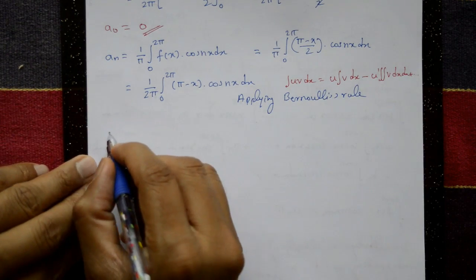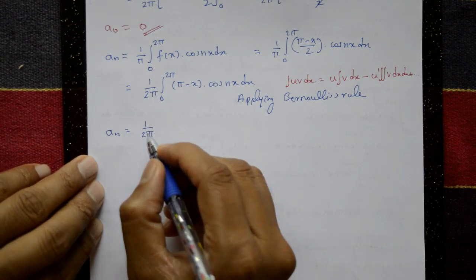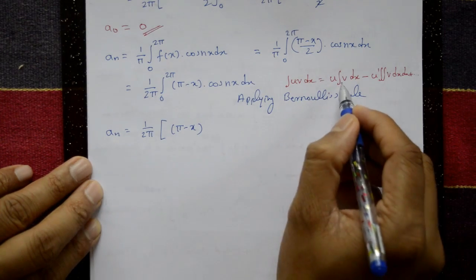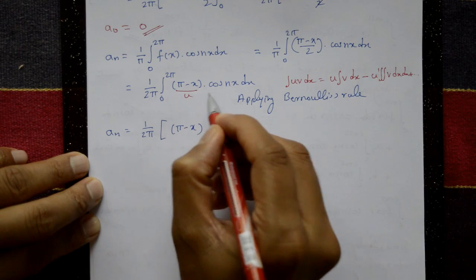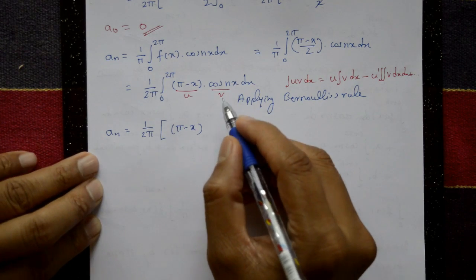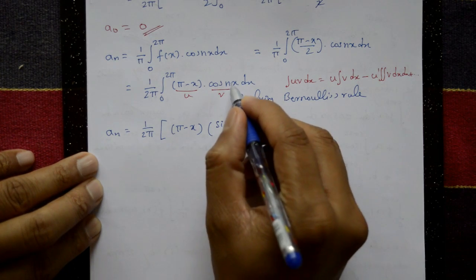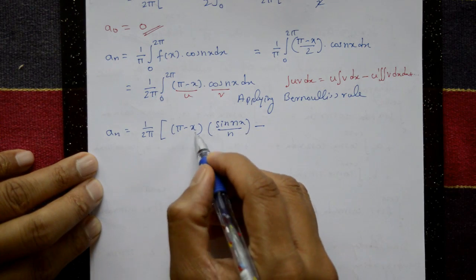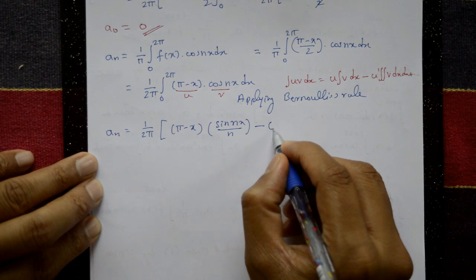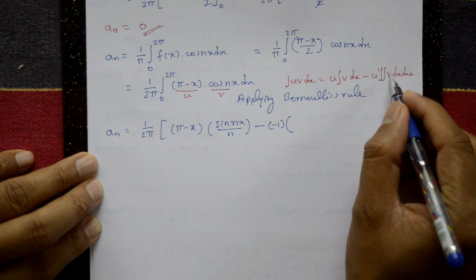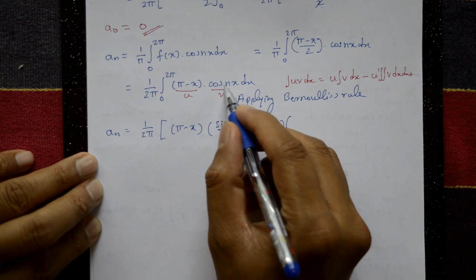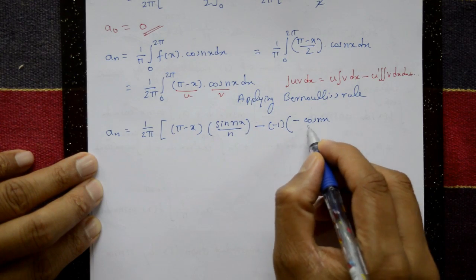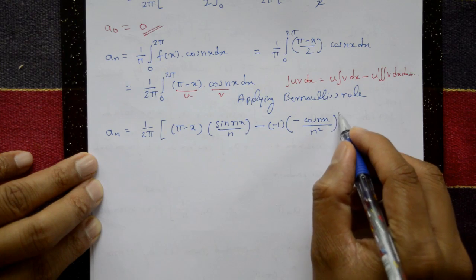Applying Bernoulli's rule with u = (π - x) and v = cos(nx): aₙ = (1/2π) × [(π - x)·sin(nx)/n - (-1)·(-cos(nx)/n²)] from 0 to 2π. The derivative of (π - x) is -1, and integrating sin(nx) gives -cos(nx)/n, so the second term involves -cos(nx)/n².